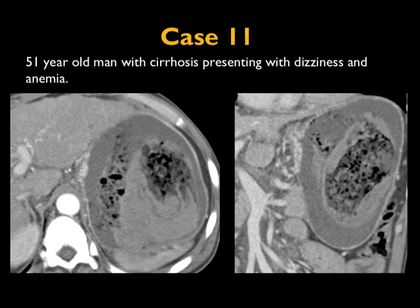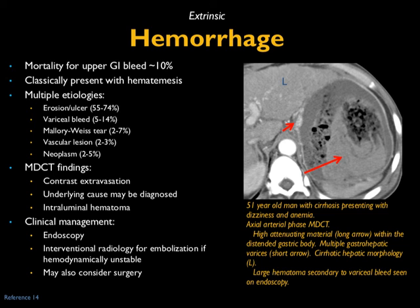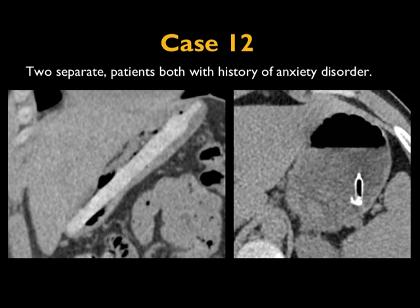Another case: patient with cirrhosis presenting with dizziness and anemia. The stomach is well distended but there's high-density material in the stomach consistent with a bleed. Mortality for upper GI bleed is under 10%. Causes include ulcer, variceal bleeding, Mallory-Weiss tears, vascular lesions, and neoplasms. With active GI bleeding you may see contrast extravasation or, as in this case, an intramural hematoma. Clinical diagnosis is usually made via endoscopy, though it can be difficult when there's food in the stomach. Endoscopy can also be used to stop the bleeding, as can surgery, making patient management very critical.